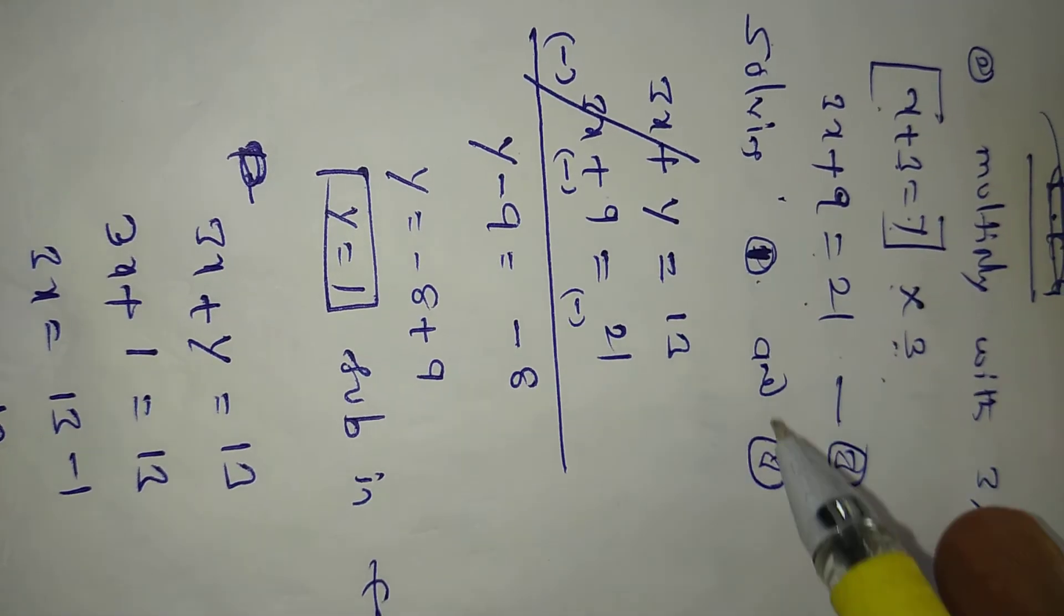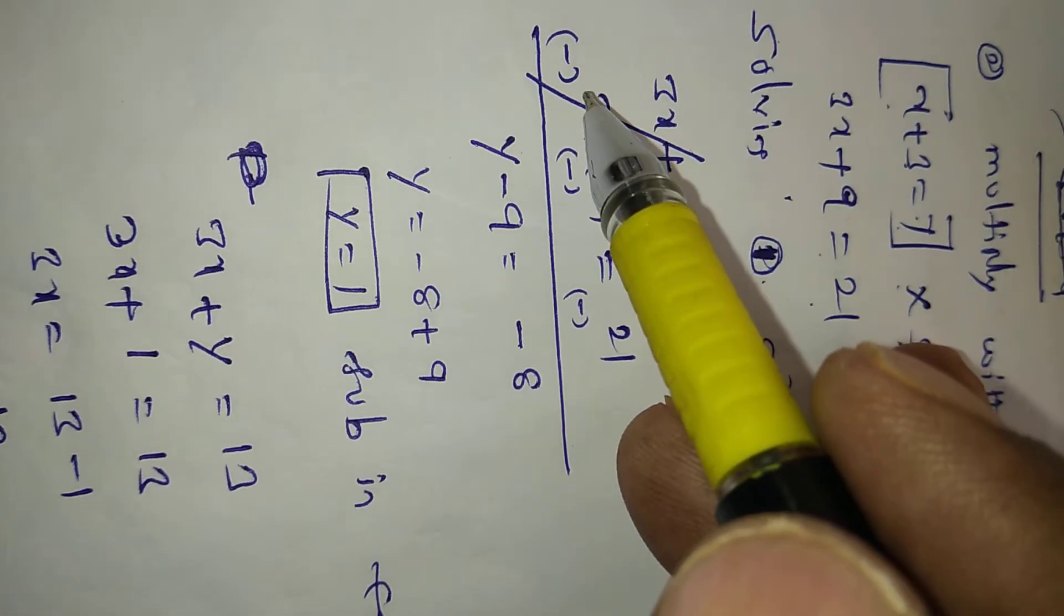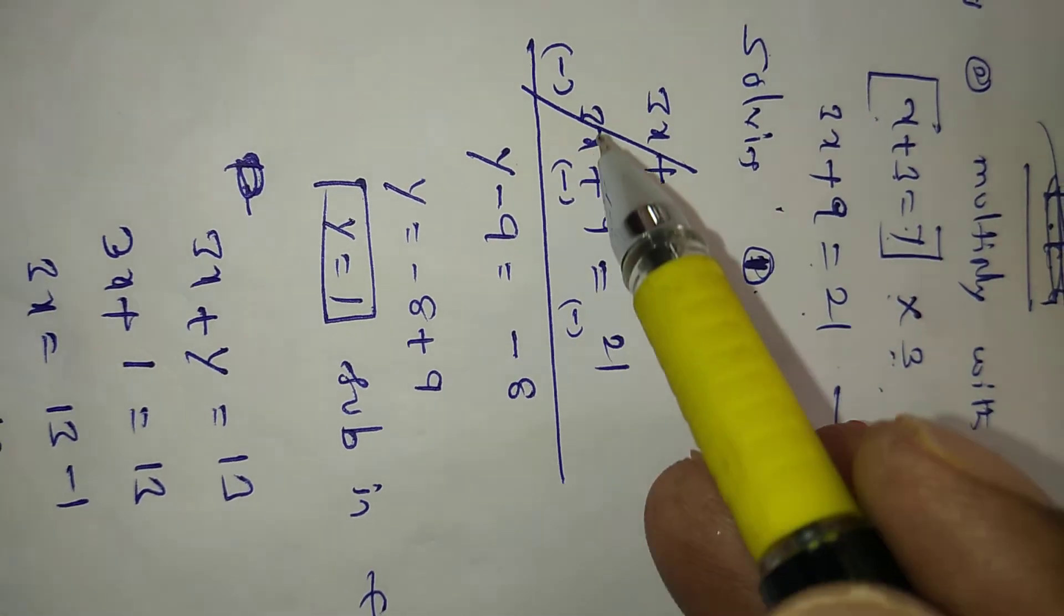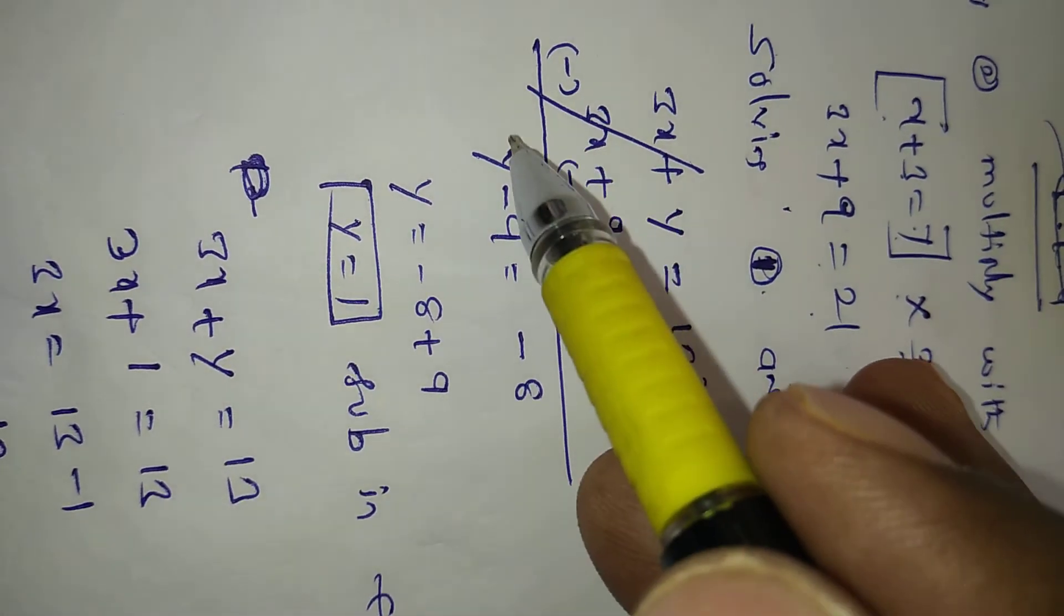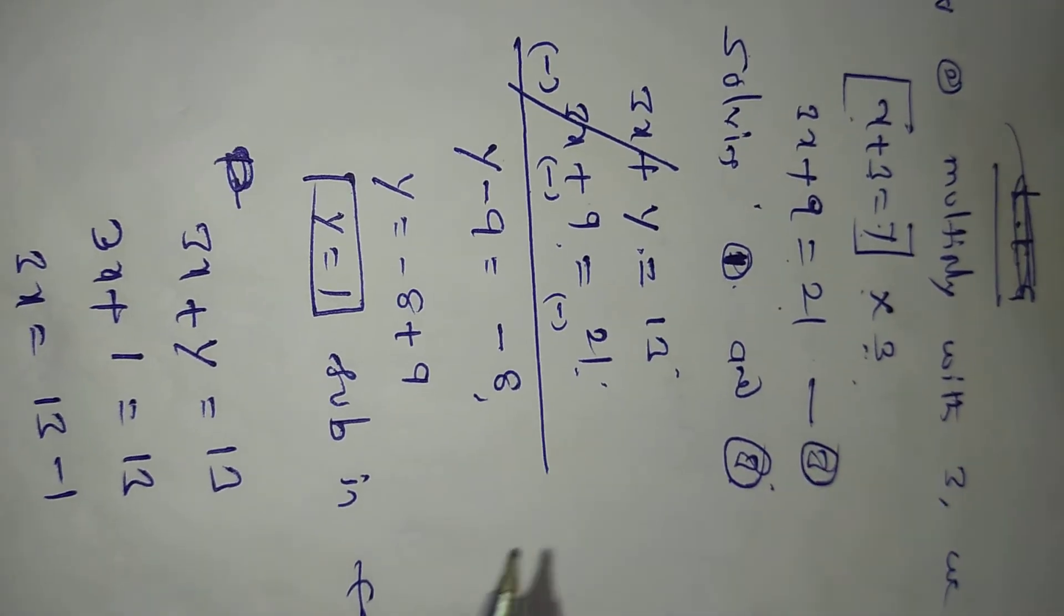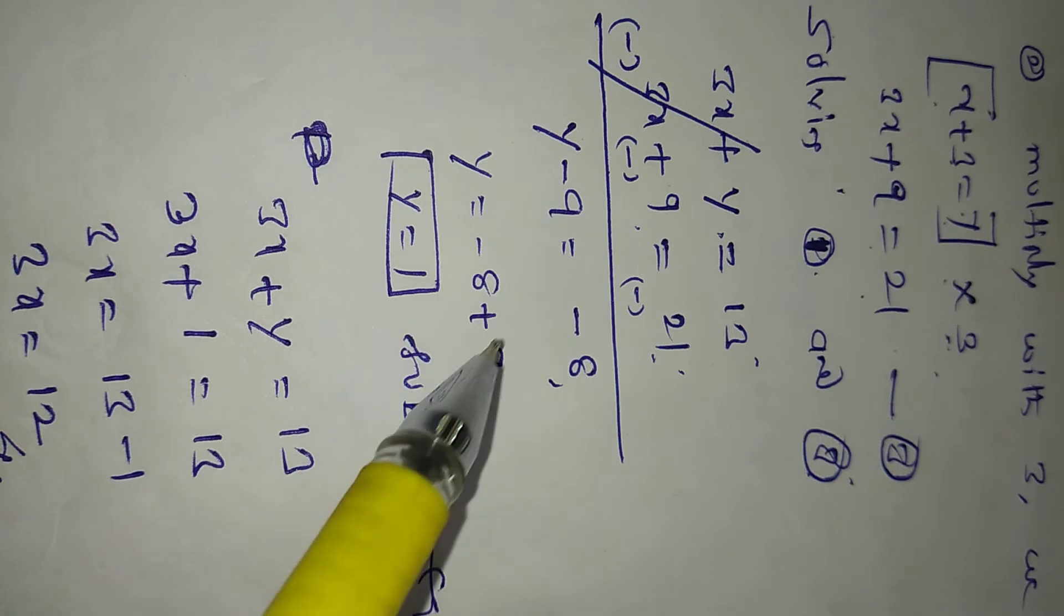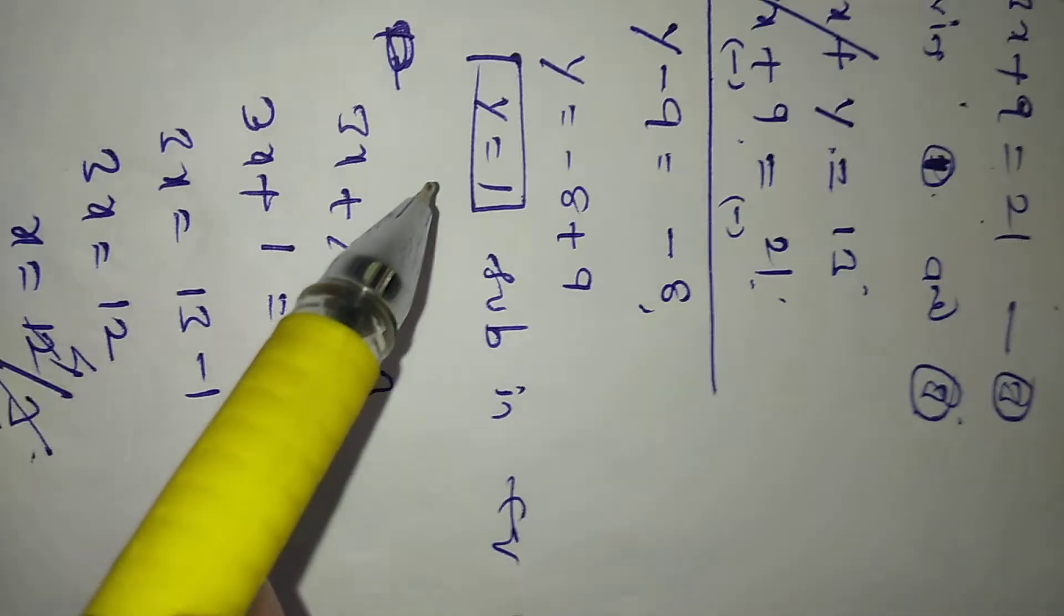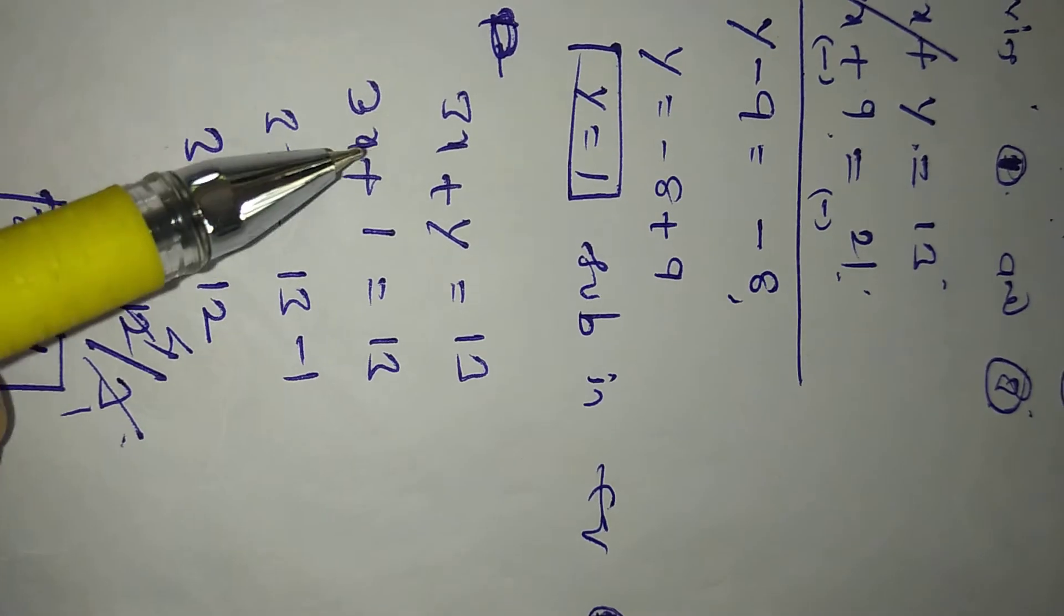Solving equation 1 and 3. Equation 1: 3x plus y equals 13. Equation 3: 3x plus 9 equals 21. We can change the symbols. After then, y minus 9 equals minus 8. We got after then, y equals minus 8 plus 9. Minus 9 becomes plus 9. 9 minus 8 equals, y equals 1.